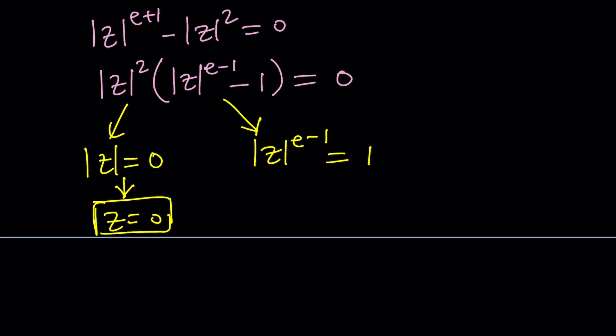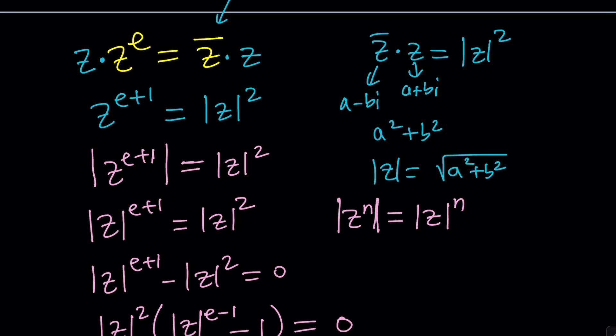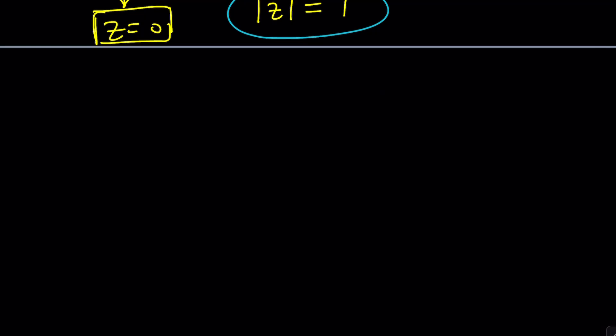Now the second one is a little bit more complicated, not too complicated though. We set the absolute value of Z to the power e minus 1 equal to 1. But notice that the absolute value of Z is a real number. Any real number to a constant power equals 1 indicates that the absolute value equals 1. It can't be negative 1 because absolute value cannot be negative.